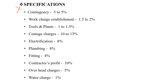The complete estimate includes standard additions: Contingency is 3 to 5%, Work Charge Establishment is 1.5 to 2%, Tools and Plants is 1 to 1.5%, Drainage charges is 10 to 15%, Electrification is 8%, Plumbing charges are 8%, Fittings is 4%, Contractor's profit is 10%, Overhead charges is 5%, and Water charges is 1%.